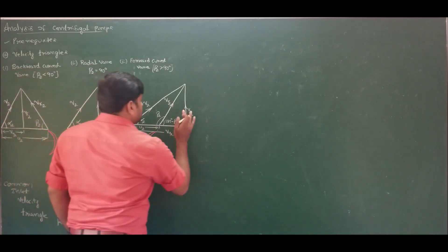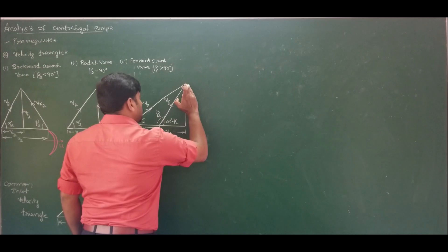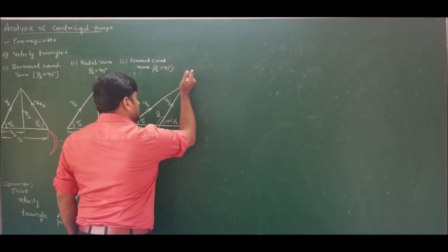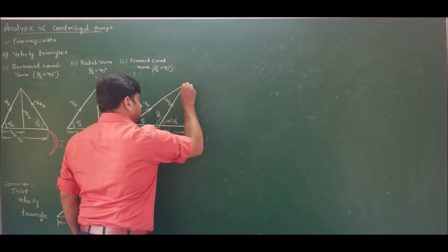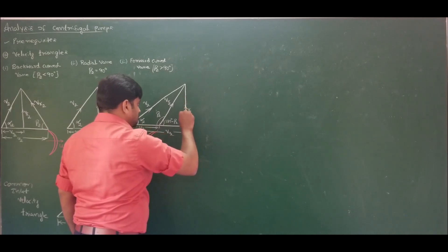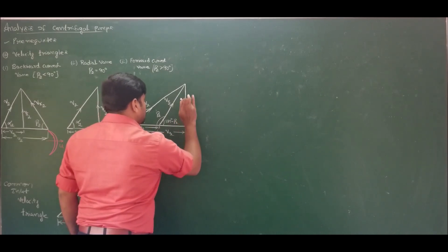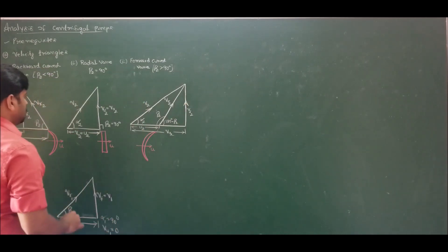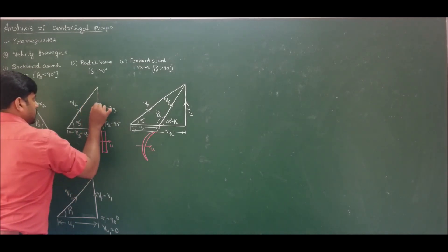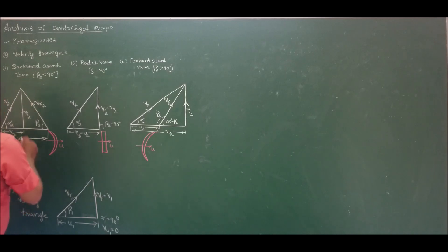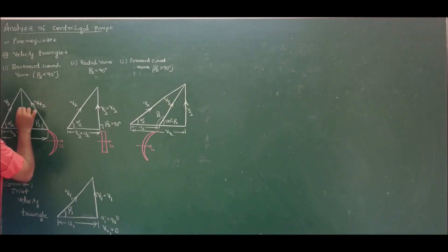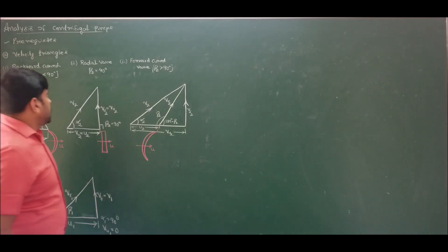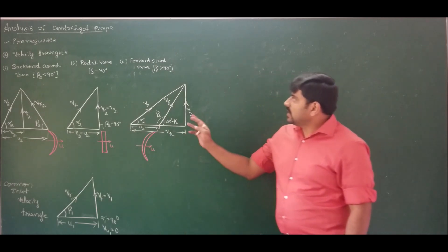An important note: the flow velocity should always be a vertical line, that is a 90-degree line, perpendicular to the tangential component. Since I am drawing a freehand sketch it might look inclined, but always it should be a 90-degree line to the tangential component. Keep that in mind — flow velocity is perpendicular in all three triangles: backward curved vane, radial vane, and forward curved vane.